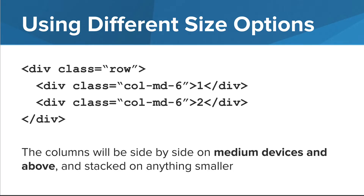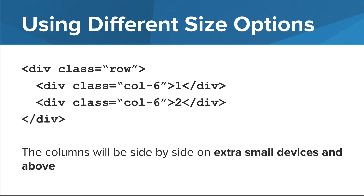Here, we've changed the breakpoint from large to medium. This means that for medium-sized devices and larger, the divs will appear side by side, each taking up 6 columns. On small and extra small devices, however, the divs will still be stacked, each taking up 12 columns. Now we're specifying that for small devices and larger, the divs will appear side by side. And lastly, we've specified the breakpoint for extra small devices, so basically any device — the divs will appear side by side, taking up 6 columns each.